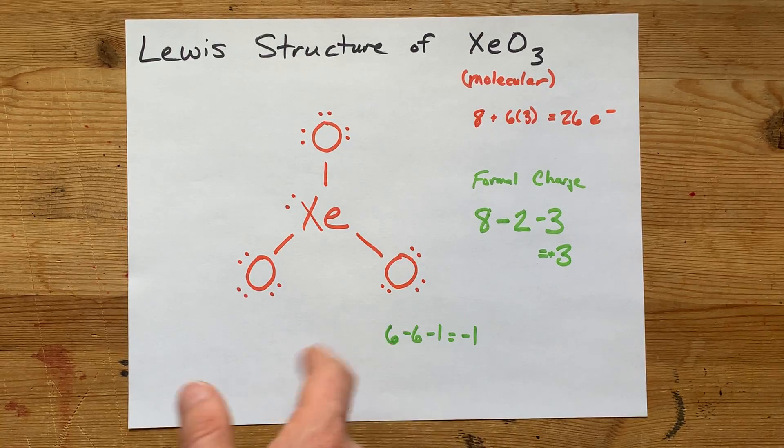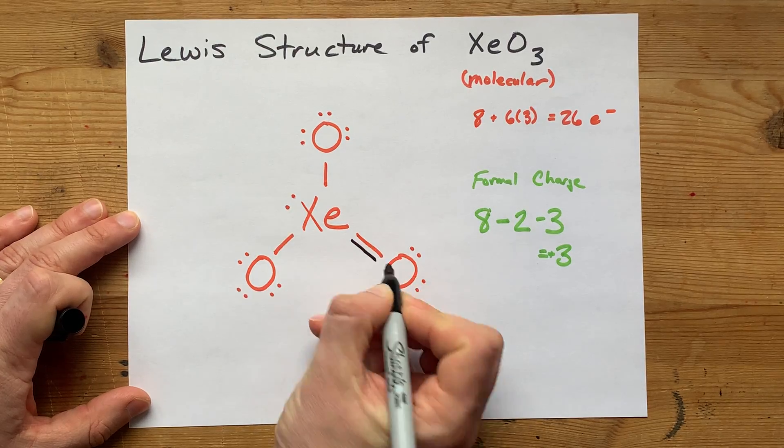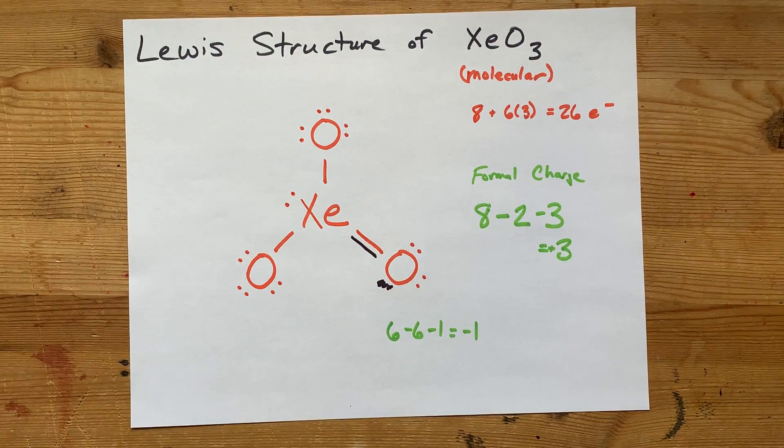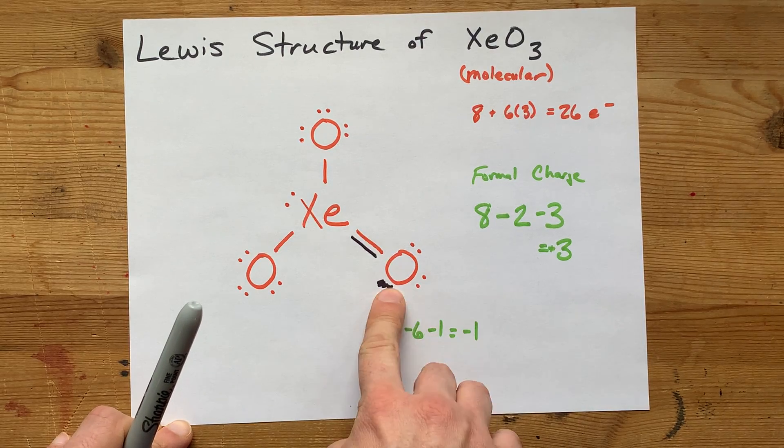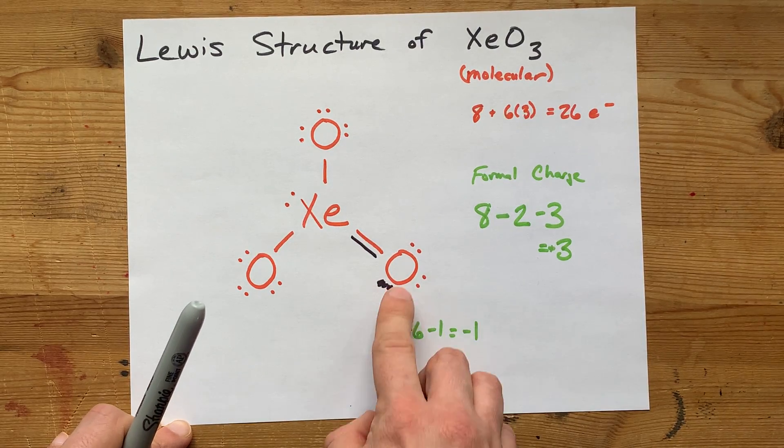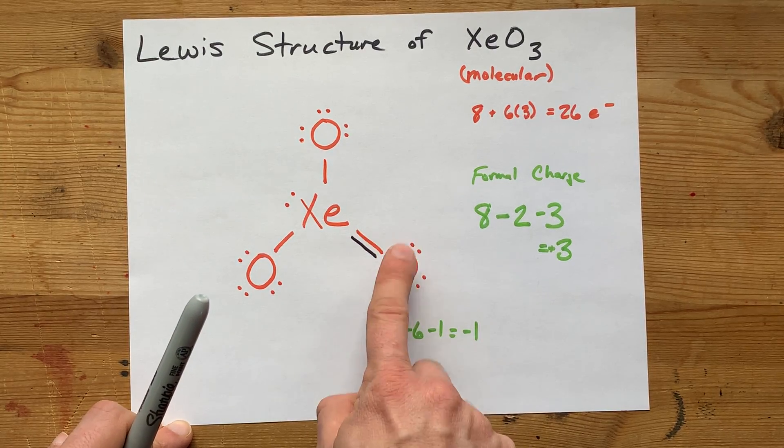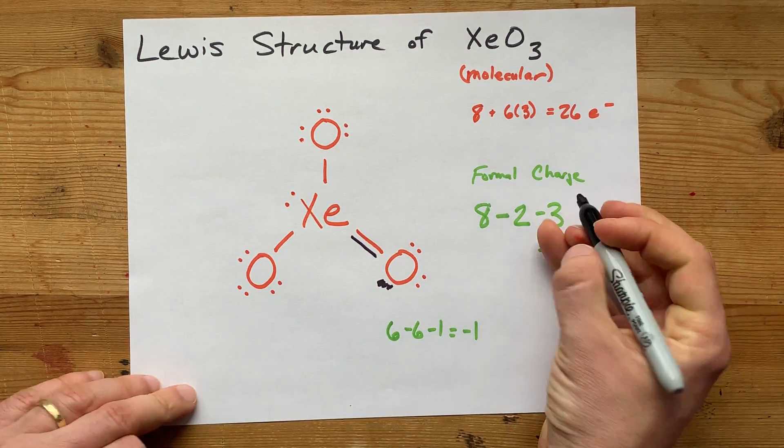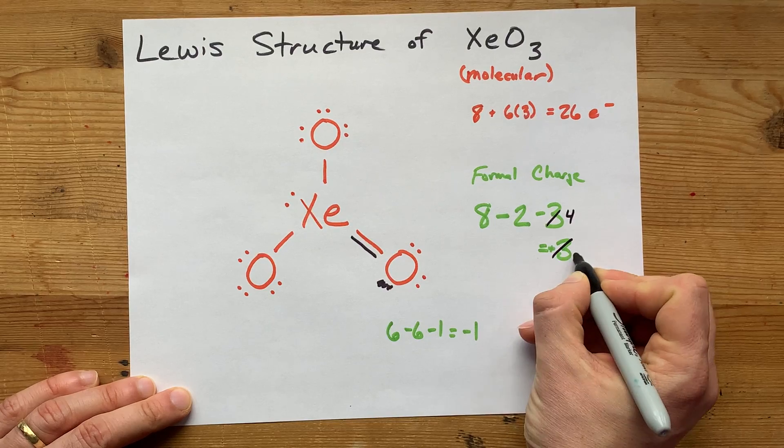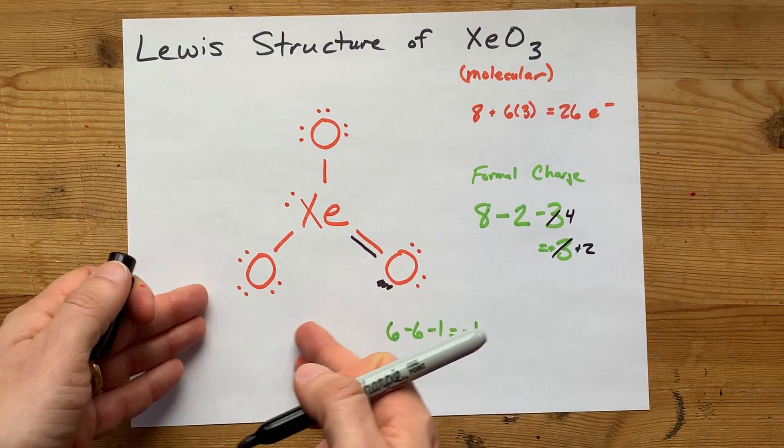Here I'm going to move this lone pair from the oxygen into a double bond. Now, what that does is it alleviates the formal charge of negative 1 on this oxygen. 6 minus 4 minus 2 is 0, so he doesn't have a formal charge anymore. And more importantly, we added a line here, so the formal charge on that xenon is now just plus 2. But look, here's an oxygen with another formal charge of minus 1.